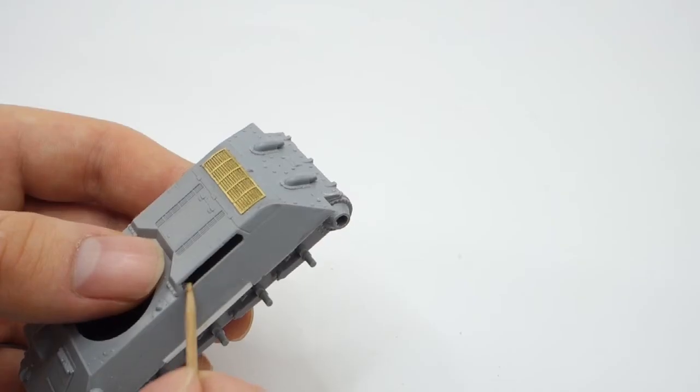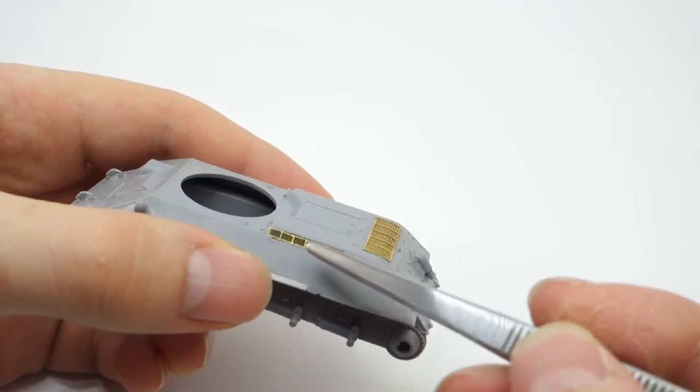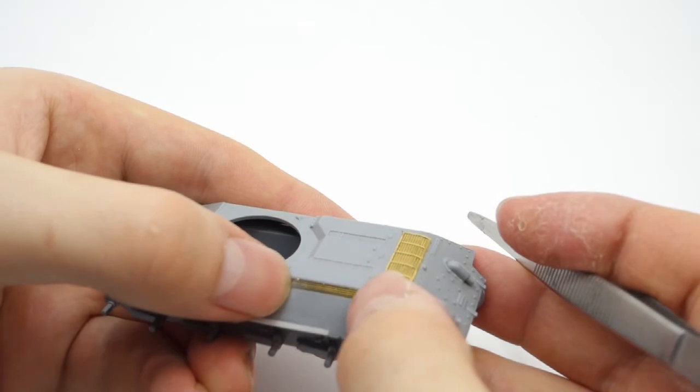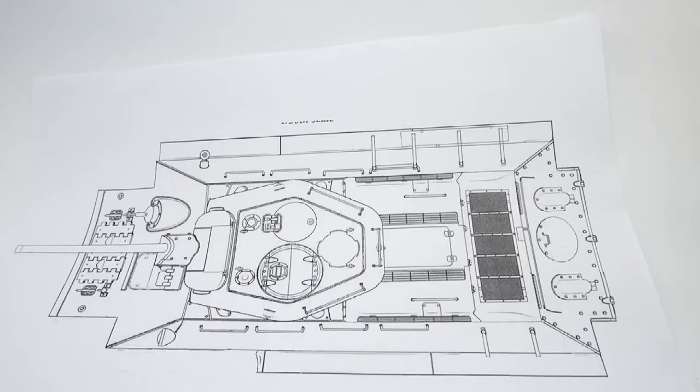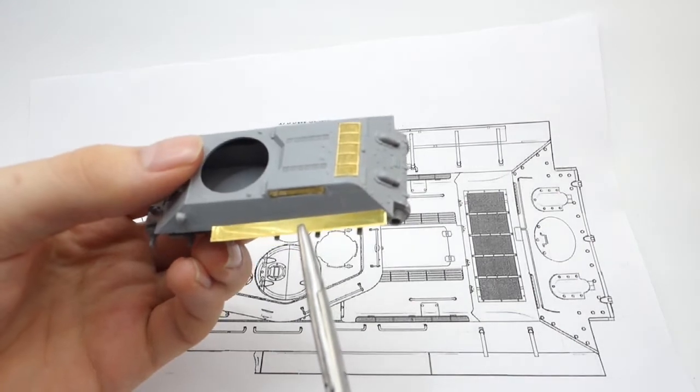And finally it's time to attach those air intakes. The photo-etched set which I bought was designed for a different kit which had different dimensions, and because of that the air intakes on the top of the hull couldn't be replaced with photo-etched parts.